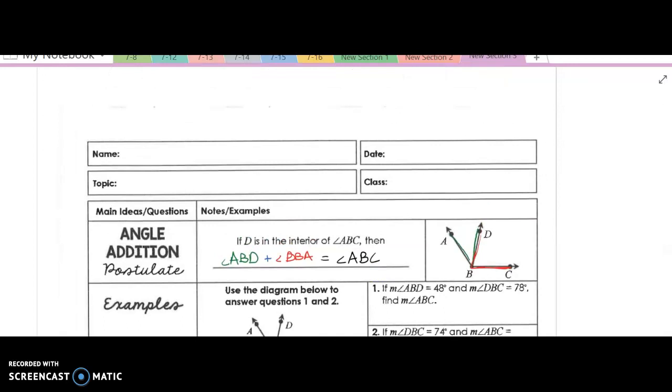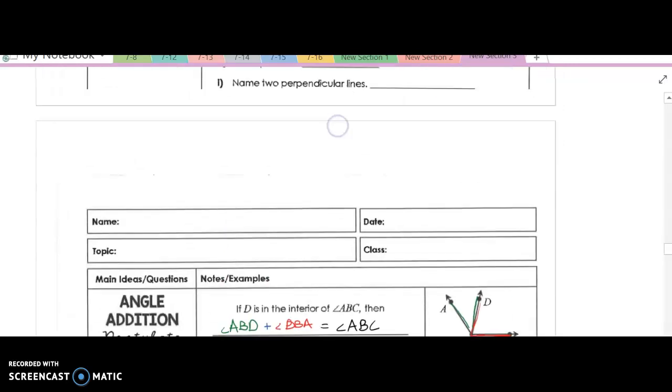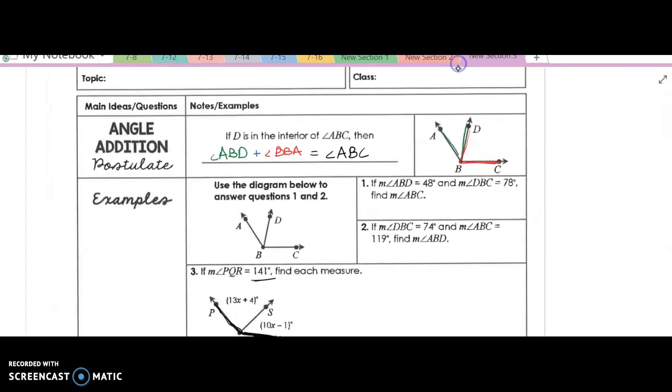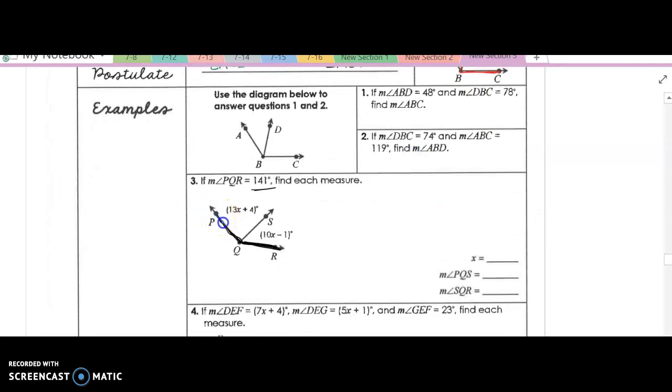Okay, well, using this postulate, that must mean that this angle right here plus this angle right here, if we add those together, it must equal 141 degrees. Okay, so let's do that to solve for x, and then we can figure out what the measure of PQS is and SQR.